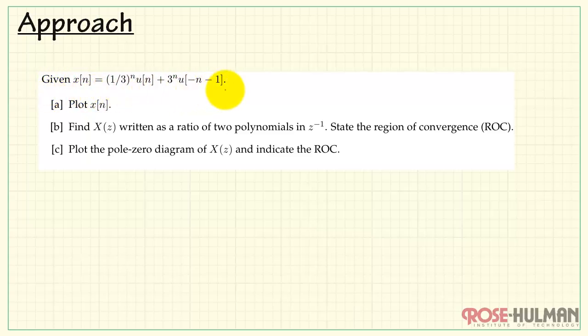Here's a general approach to this problem. We are given a signal, X of n. We want to plot the signal, find its Z-transform as a ratio of two polynomials in Z-inverse, and then state the region of convergence, and we're also looking for the pole-zero diagram.